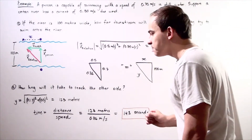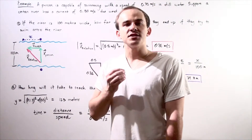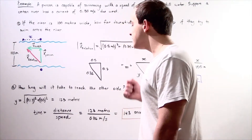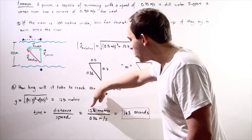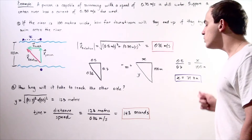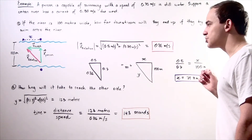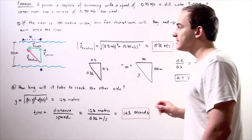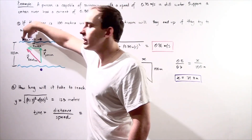Now, what about the time? Recall that time equals distance divided by speed — the magnitude of velocity. Since we know the distance and we know the relative speed, we get 123 meters divided by 0.86 meters per second, and we get approximately 143 seconds. Our person spends approximately 143 seconds in the river crossing it from point initial to point final.